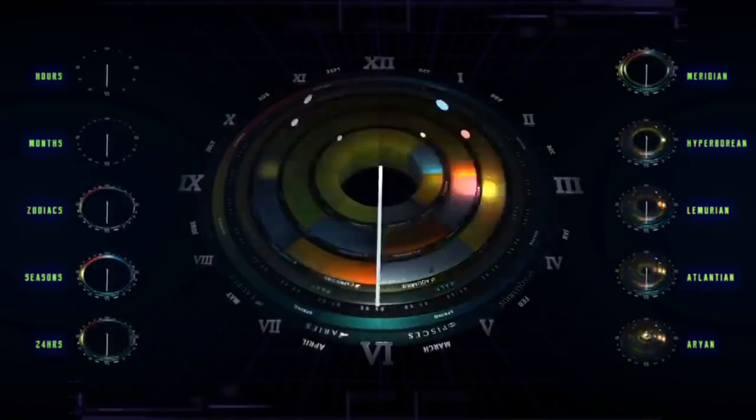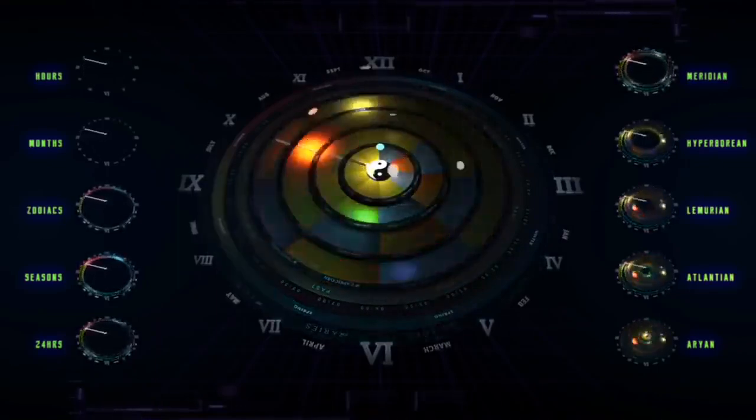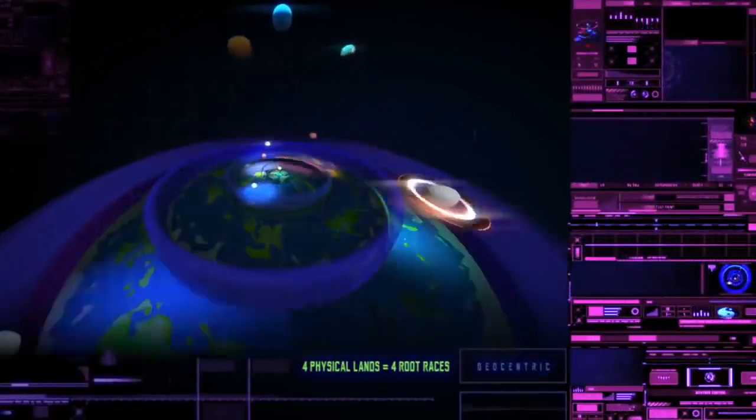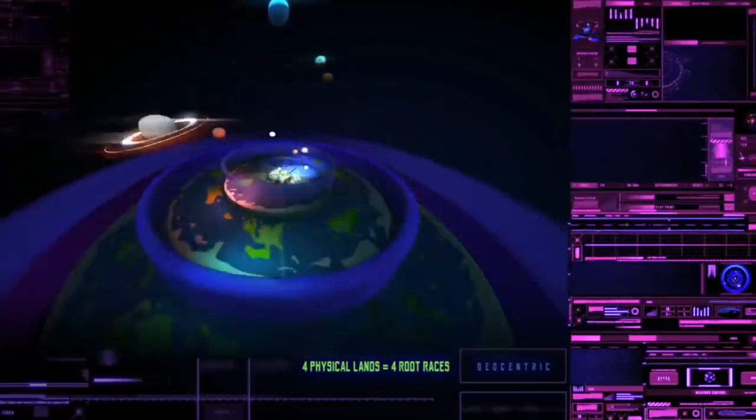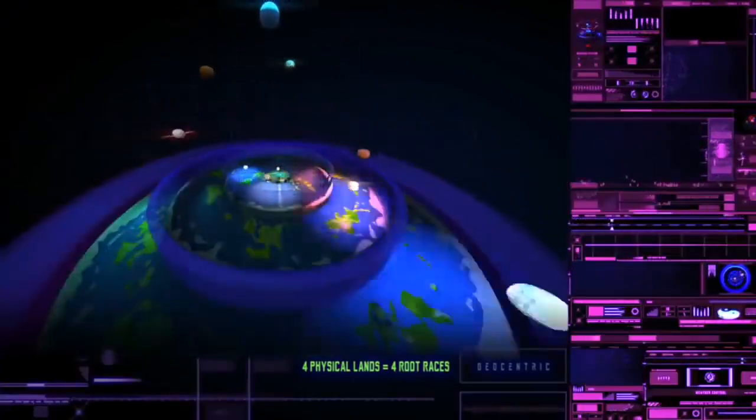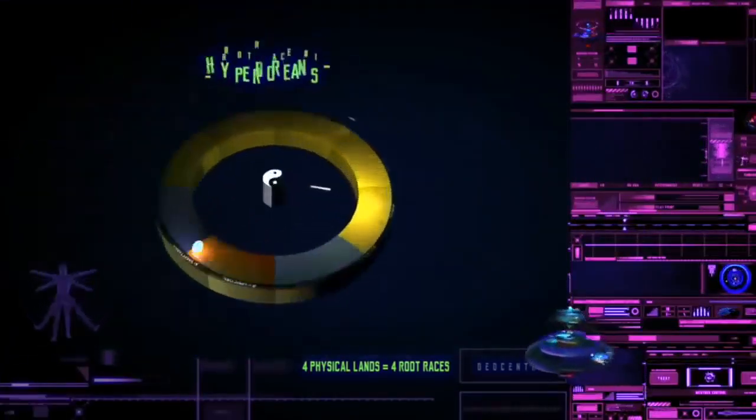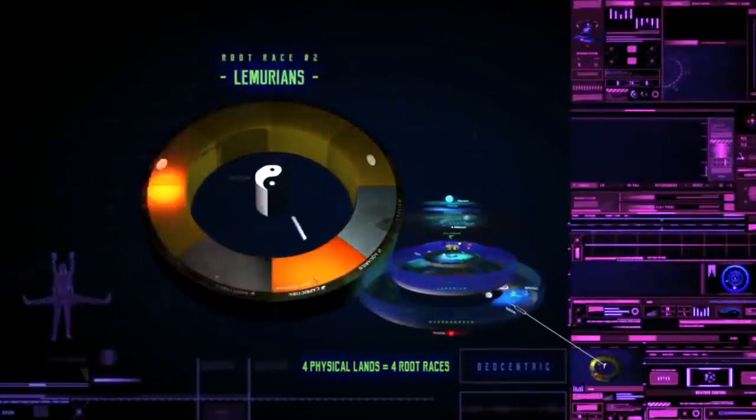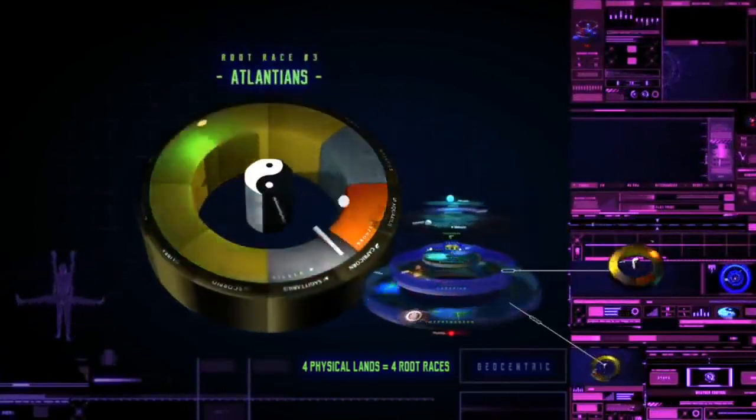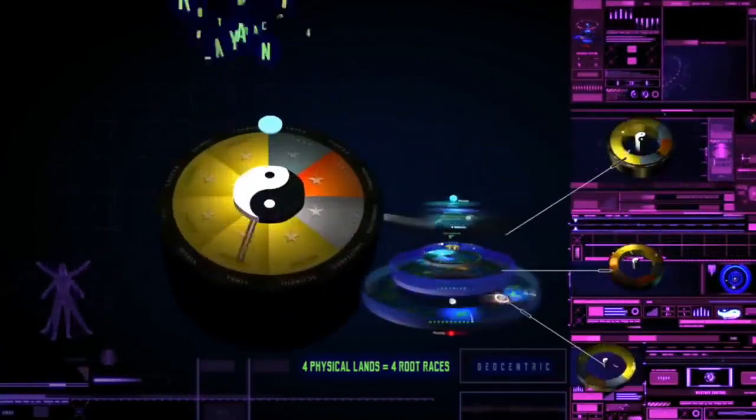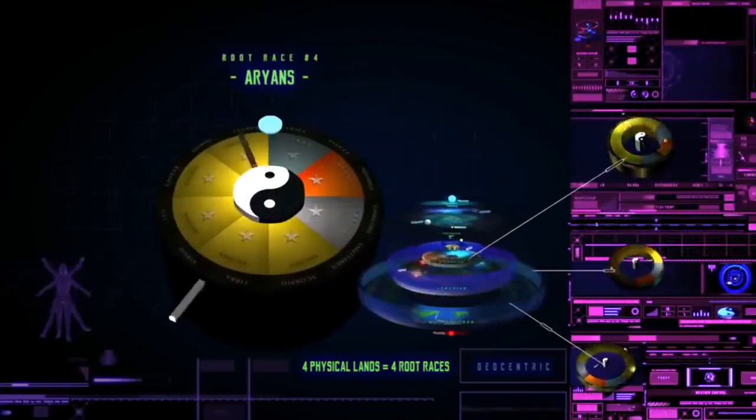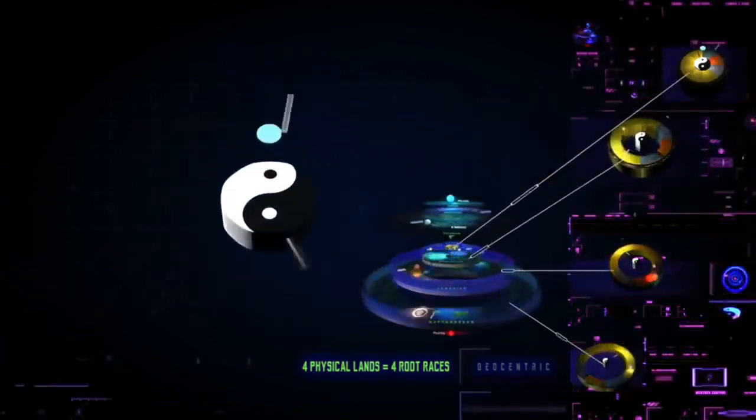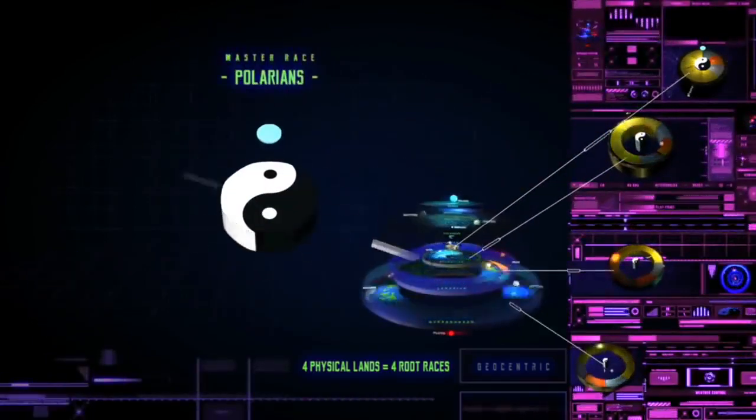As stated, we've already had four epoch cycles and we are currently a quarter past the fifth. Now, just as there are four earthly physical realms, there are also four physical humanoid root races associated with the creation of each realm. These four root races are the Hyperboreans, Lemurians, Atlanteans and Arians. But there's also a fifth race of beings that lives in the center, Mount Meru, of our Earth. This is the master root race, the Polarians.